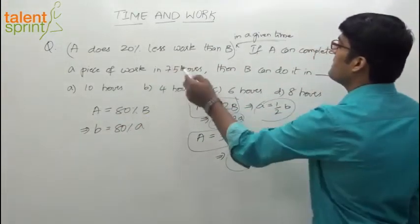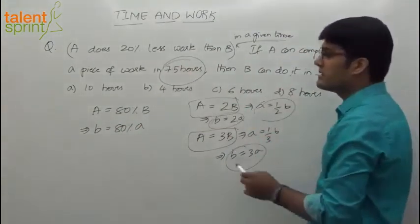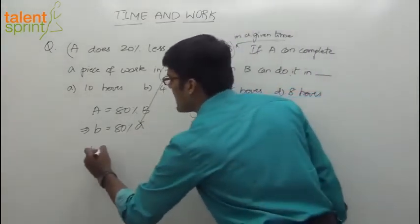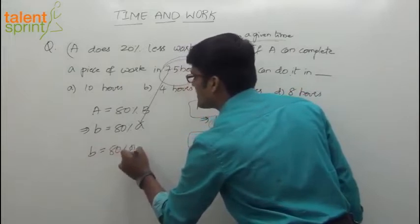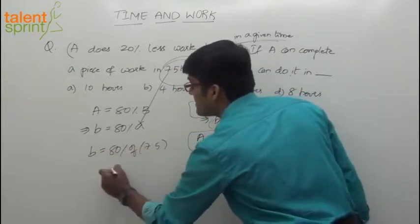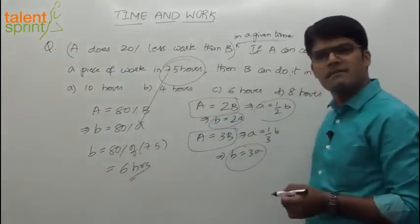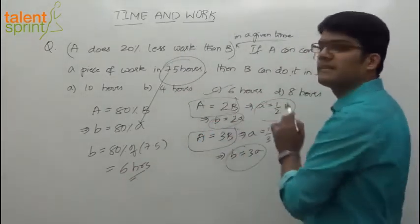Now A can finish a piece of work in 7.5 hours, then B will do it in how many hours? A can finish it in 7.5 hours. Substitute here. So B's time required will be 80% of 7.5. How much is that? 6 hours. 80% of 7.5 hours is 6 hours, which is option C here.